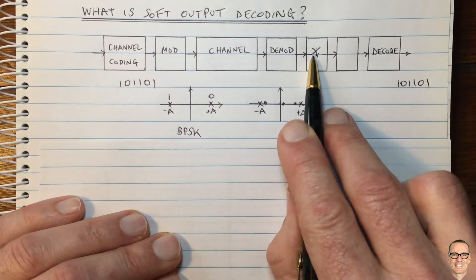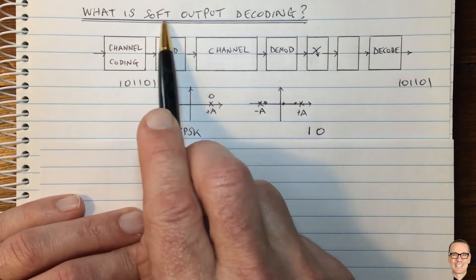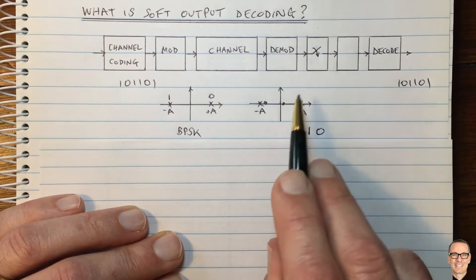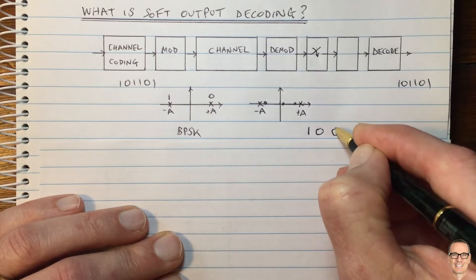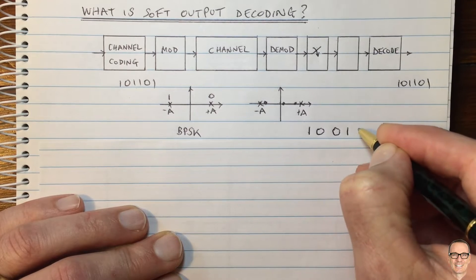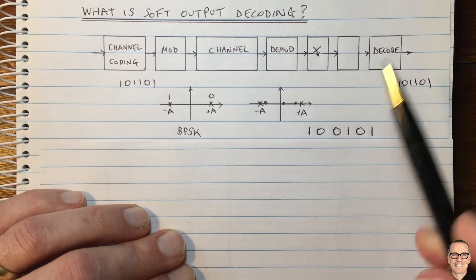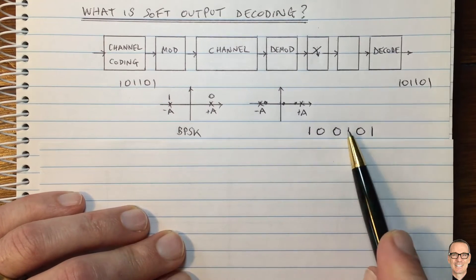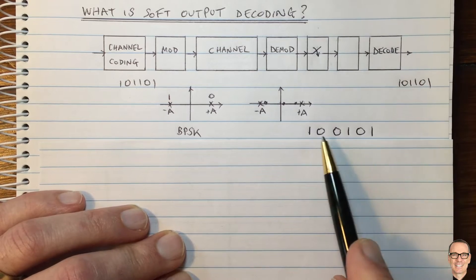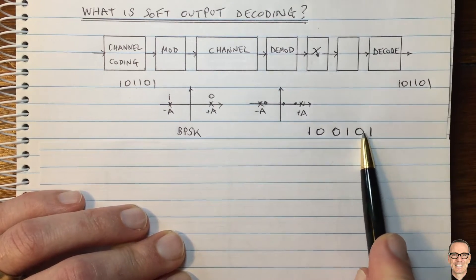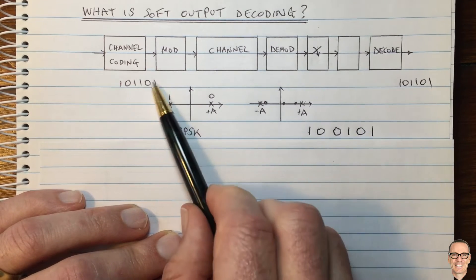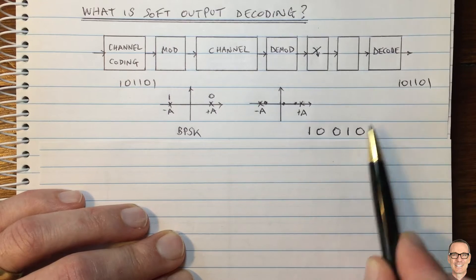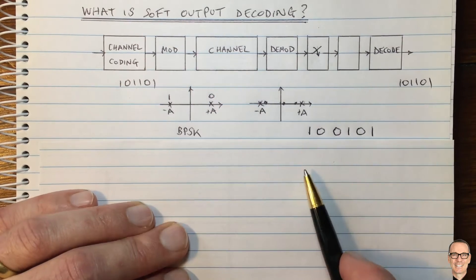If we're doing the standard type of detection — which we call hard detection — the detector decides this is a plus A, mapping it to a zero, and the rest come through on the correct side. When we then decode this sequence using parity check, we notice it doesn't have even parity, so our decoder knows it needs to correct one of these bits. However, it doesn't know which one to correct, and this is where soft output decoding comes in.